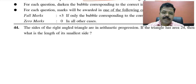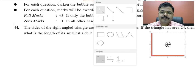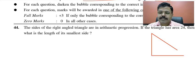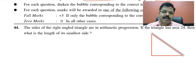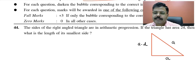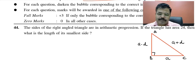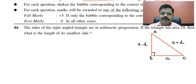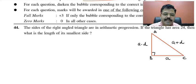I draw a right angle triangle and assume the sides are in AP: one side is a minus d, the other side is a, and the third side — which must be the hypotenuse — is a plus d. The area of the triangle is given as 24.